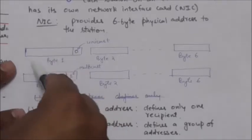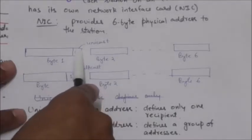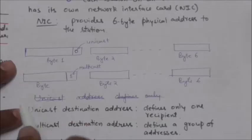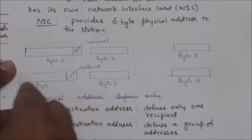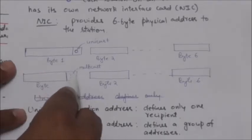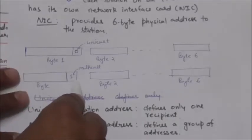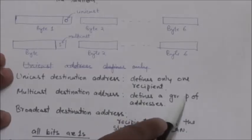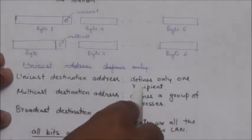If the least significant bit of the first byte in the destination address is zero, then the address is unicast. A unicast destination address defines only one recipient. If that bit is one, then the destination address is multicast. A multicast destination address defines a group of addresses.